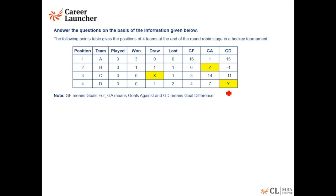The data set is on a tournament. The following table gives the position of four teams at the end of the round robin stage in a hockey tournament. We have the teams, the games they have played, the number of wins, draws, lost, goals for, goals against, and goal difference. So the basic information is given.